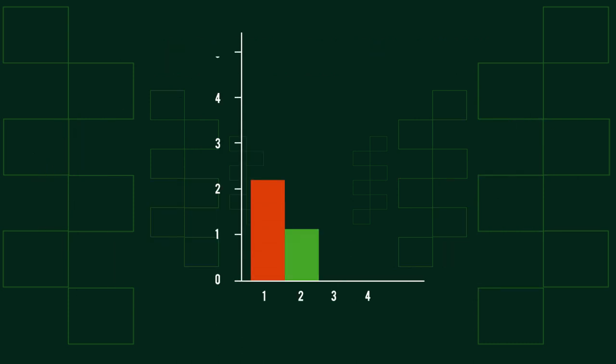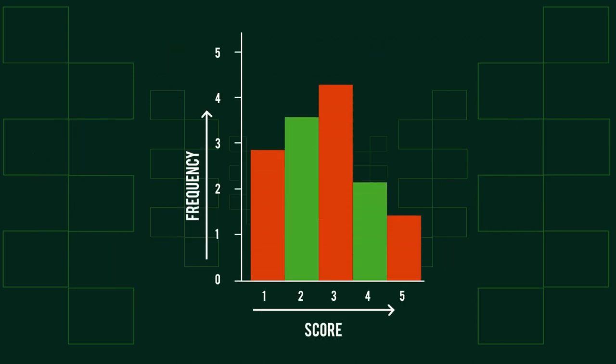It's important to remember that when you have different class widths, you need to plot frequency density on the y-axis. You can however have a histogram with frequency, but the class widths must be even. These tend to feature discrete data such as shoe sizes and scores rather than continuous values.